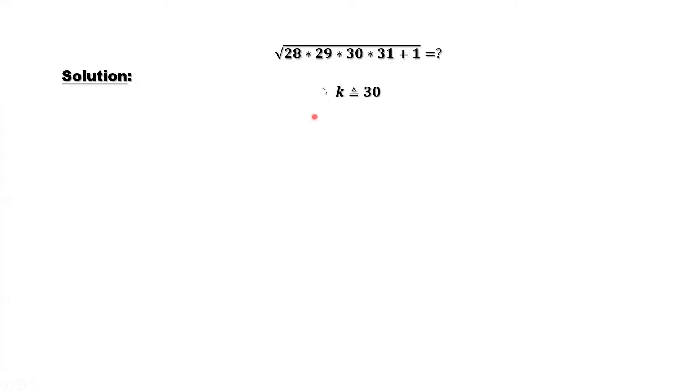We want to simplify the inside part of the square root. We write those four consecutive numbers in terms of k. 28 equals 30 minus 2. That means k minus 2. 29 equals k minus 1. This is k. This is k plus 1.